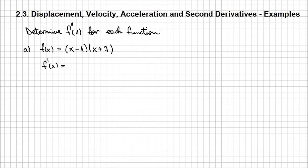The first derivative, f prime of x, for this function is going to be, since it's a product, it's going to be d/dx of x minus 1 times the other expression x plus 7 unchanged, plus x minus 1 times the derivative of the second expression x plus 7.